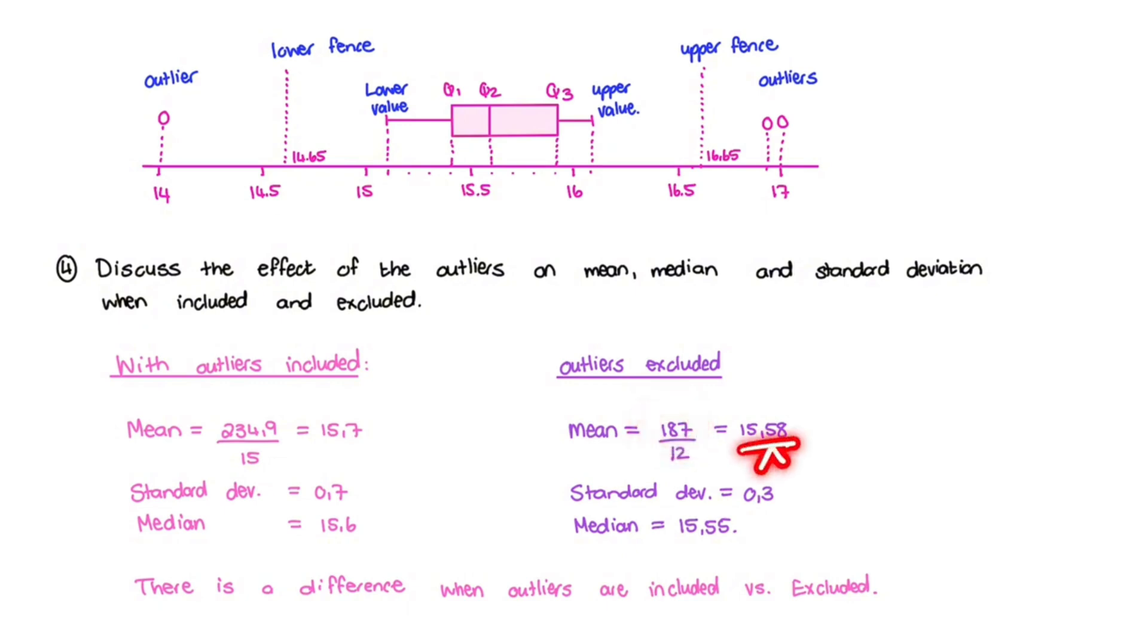For the standard deviation, using all 15 values, we have 0.7. And the standard deviation, using the 12 values that remain, we have 0.3. So that shows you the impact of an outlier. The outliers create a higher deviation. Where if you remove or ignore the outliers, the standard deviation is lower.